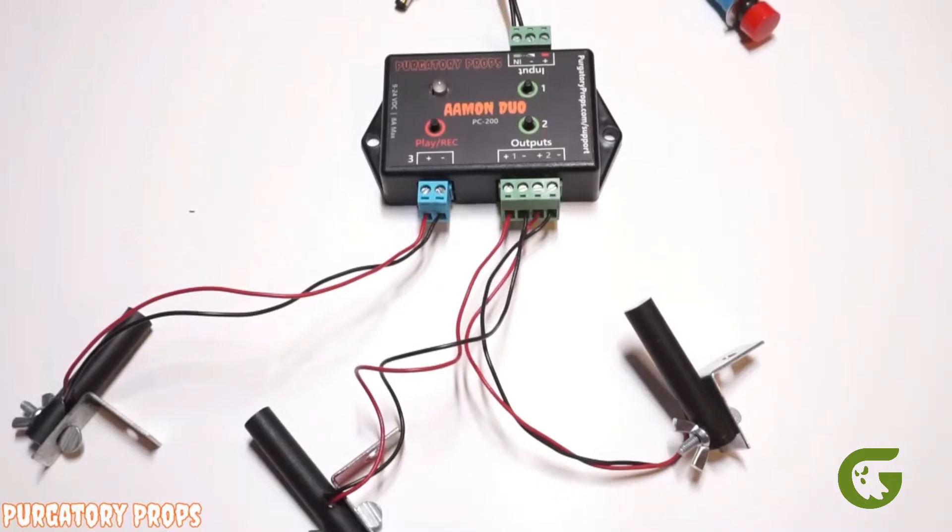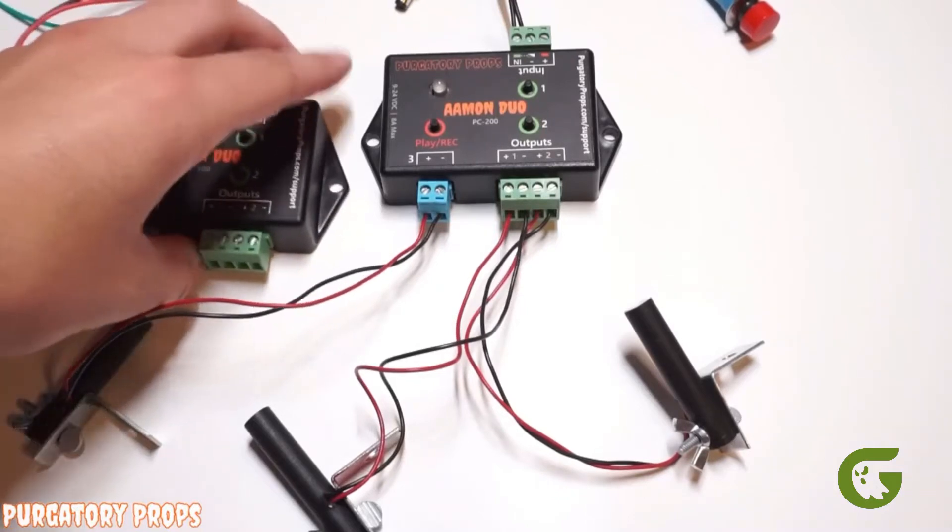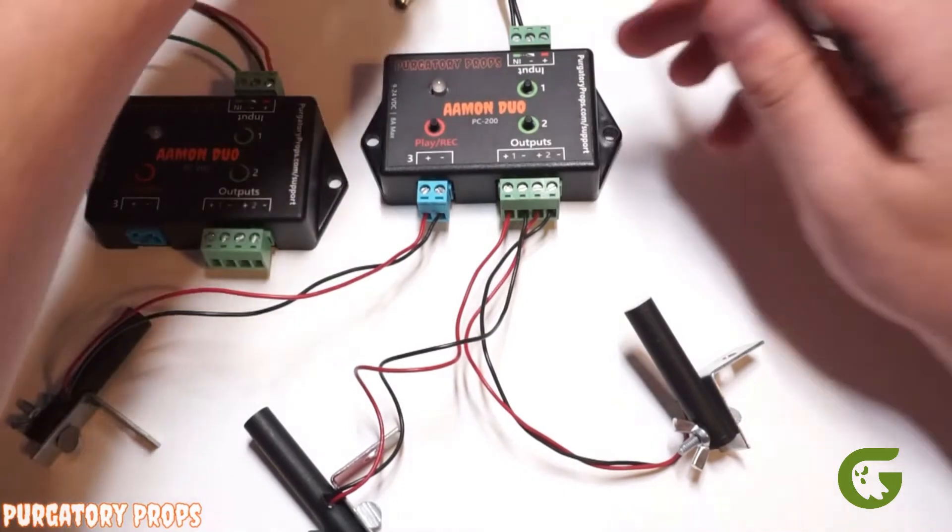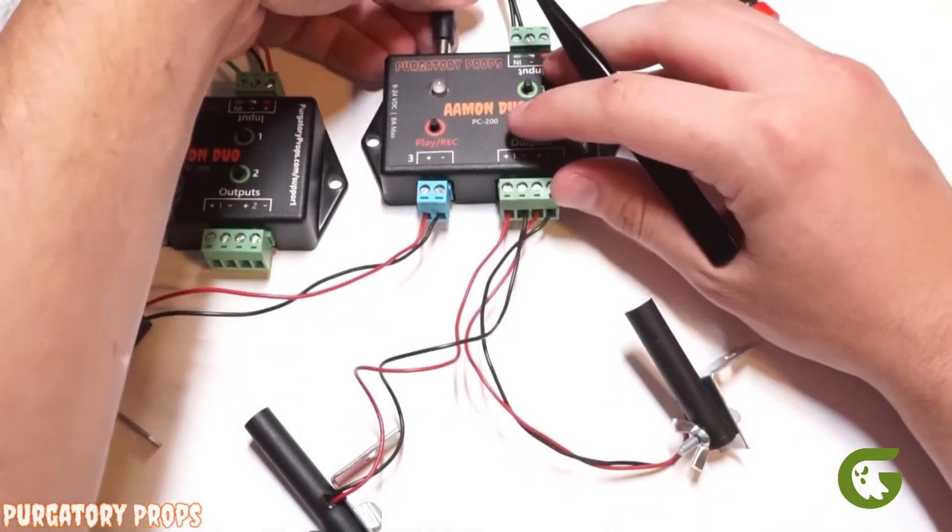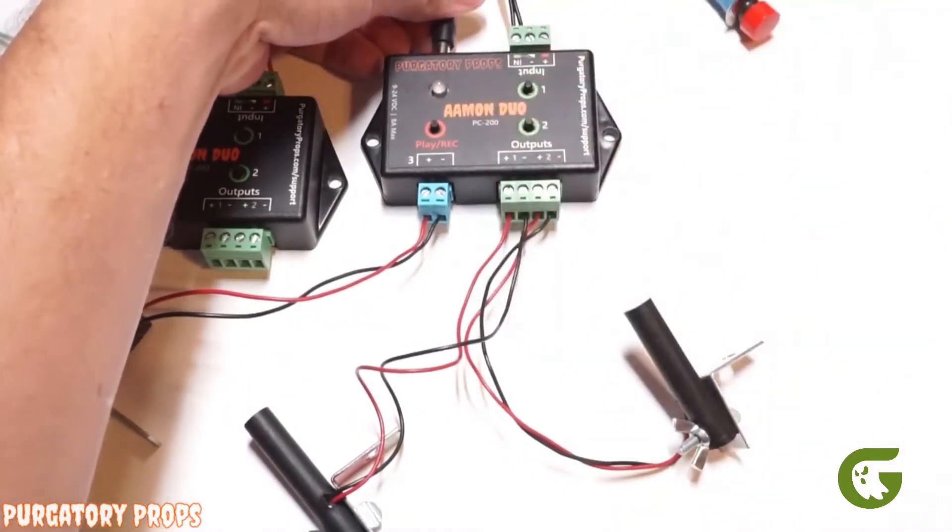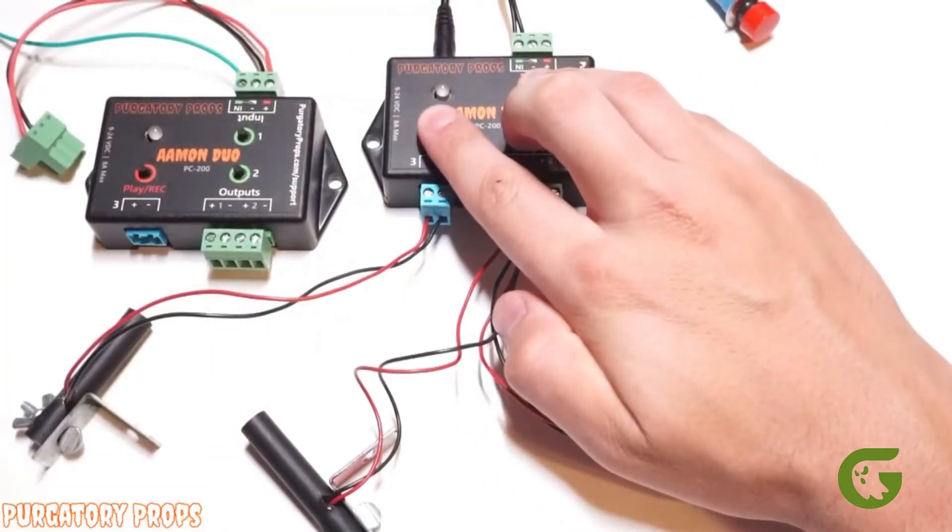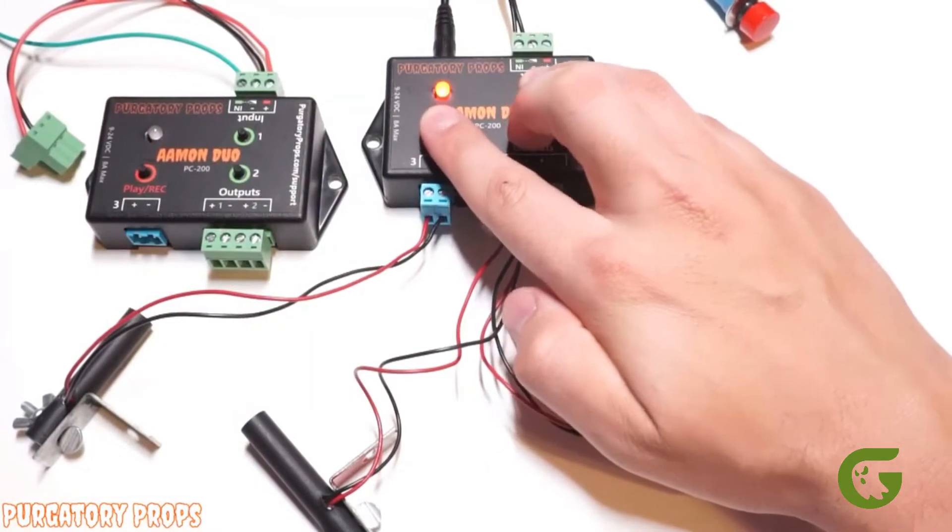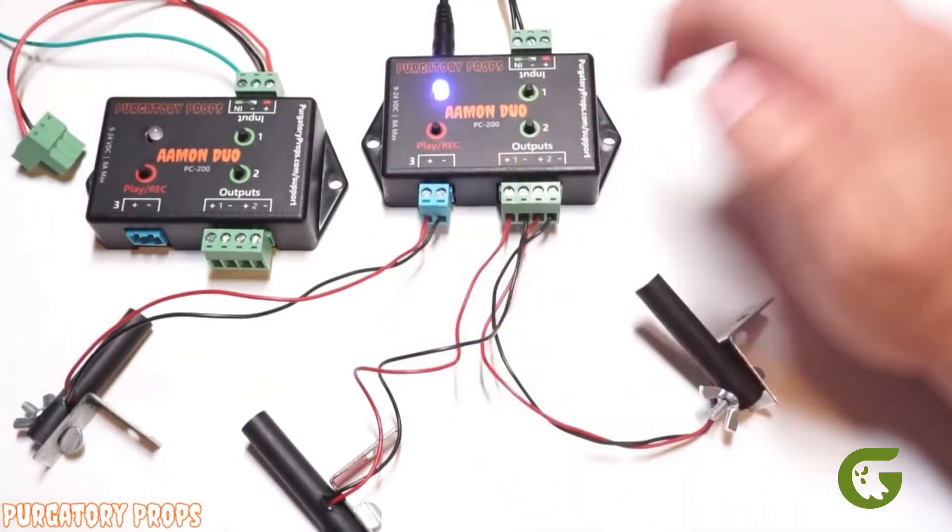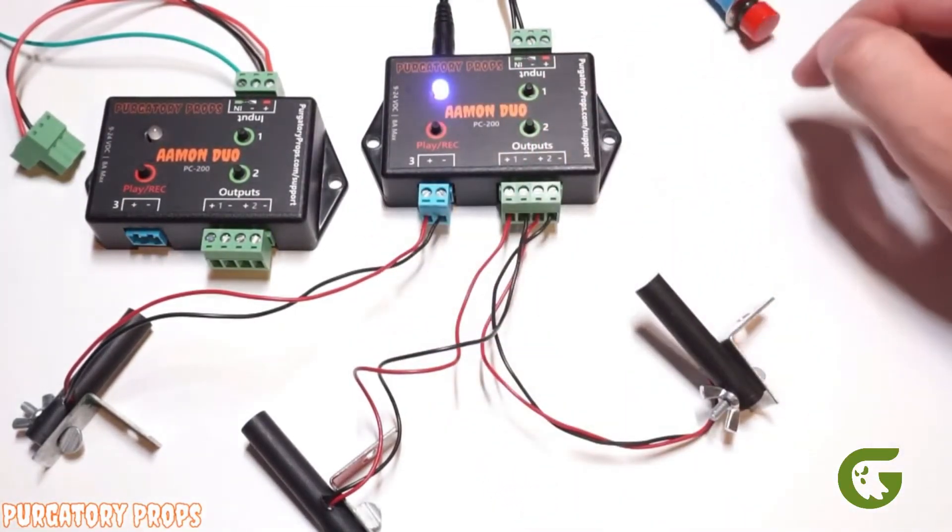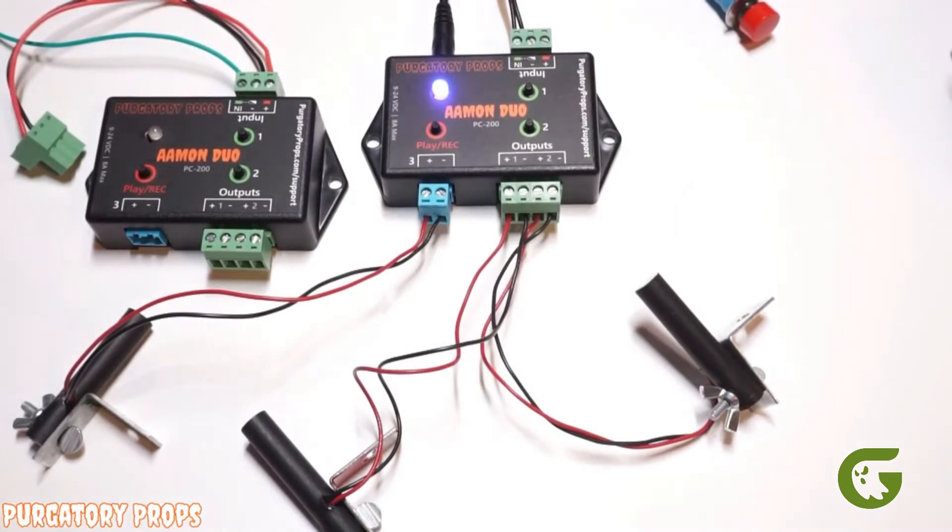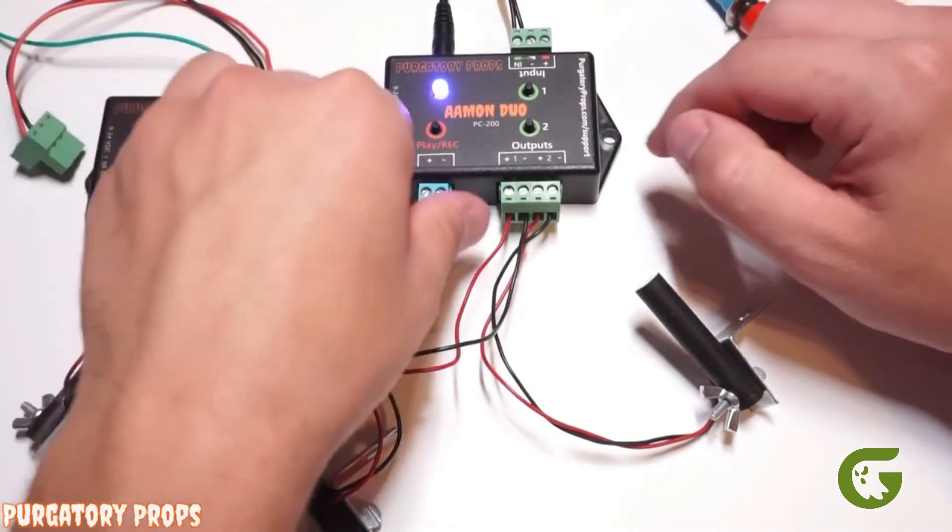If you want to be more advanced with your third output, you can trigger other controllers. So let's put this third output into end mode by holding all three buttons, releasing when it turns red. And now the third output will turn on for one second after the animation is done recording or done playing.